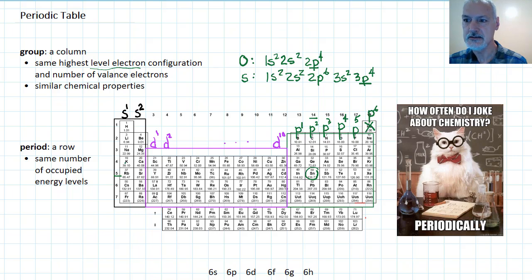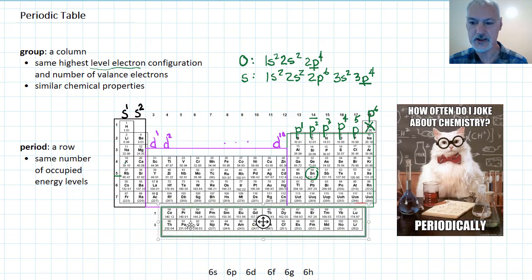And lastly, down at the bottom of the periodic table, down here, we have our f-block, with elements finishing f1 through f14.